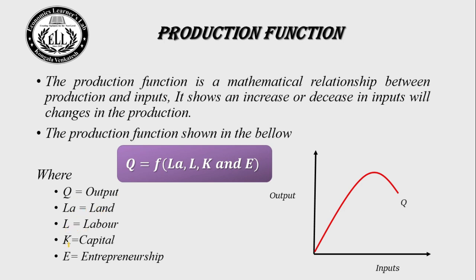In this equation, Q (output) is the dependent variable, while land, labor, capital, and entrepreneurship are independent variables. The equation shows how changes in the independent variables — land, labor, capital, and entrepreneurship — impact the dependent variable Q (output).